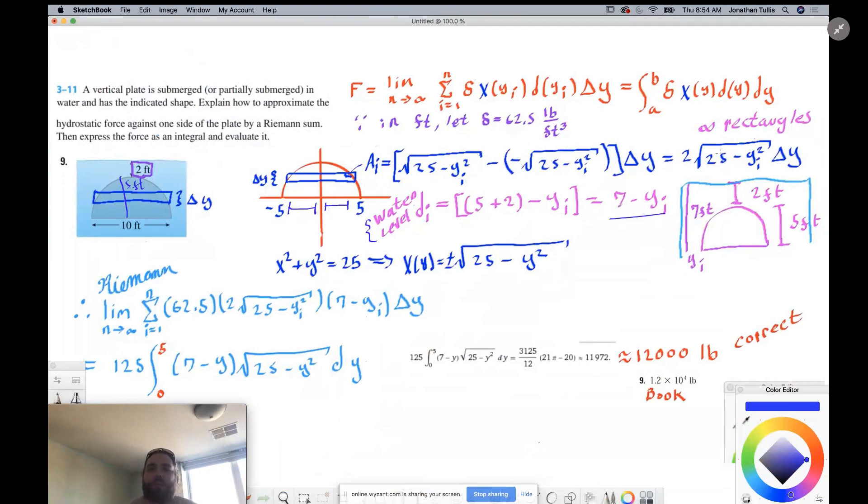And the water level in this case is going to be the diameter, we have five feet. So it'll be five feet plus two. And then the height at any given point is going to be y. So you take the water level and then subtract the height. And then that leaves you with this piece. And then if you're relating this to the Riemann sum, and don't forget the 62.5 is the water density.